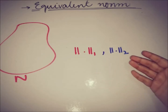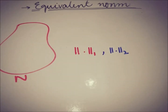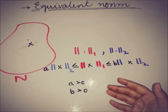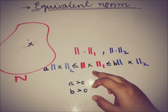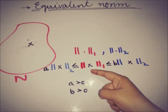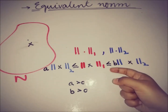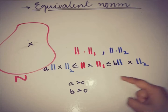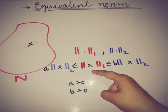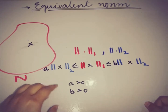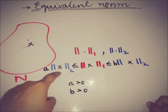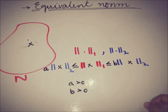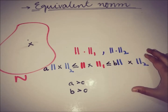We have norm 1 and norm 2, the two norms on the normed space N. Then norm 1 is said to be equivalent to norm 2 if it satisfies the inequality: for an element X of the normed space, the norm 1 of X is less than some scalar times norm 2 of X, and norm 1 of X is greater than some scalar times norm 2 of X, where the scalars a and b are non-zero positive real numbers.